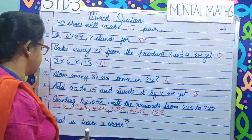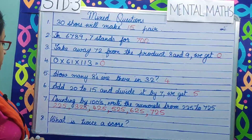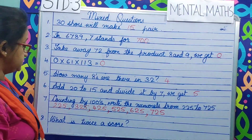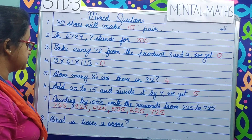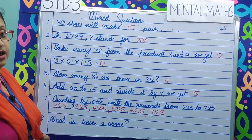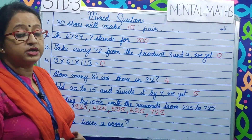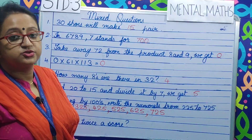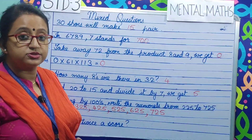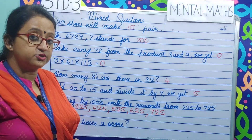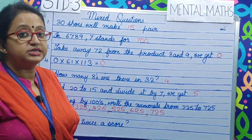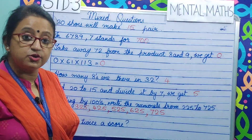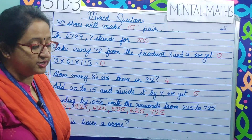Question number 8. What is twice a score? 1 score equals 20, so 2 scores equal 20 multiplied by 2, which makes it 40.